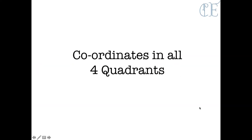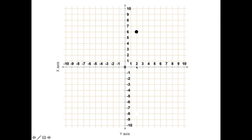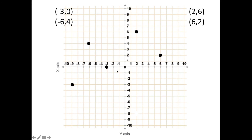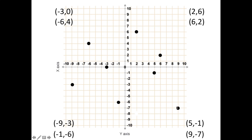Now, coordinates in all four quadrants together: (2, 6), (6, 2), (−3, 0), (−6, 4), (−9, −3), (−1, −6), (5, −1), (9, −7). This gives you an idea of how to plot them across all quadrants — just make sure you always use the x-coordinate first.